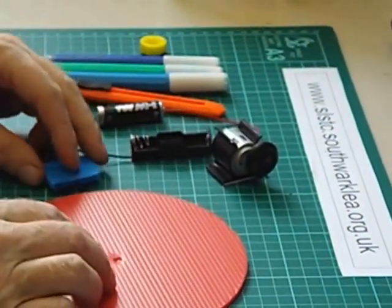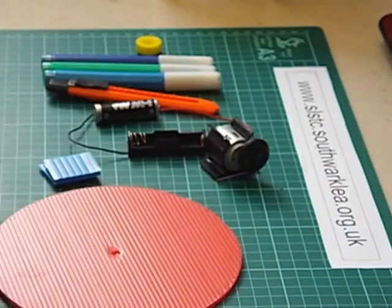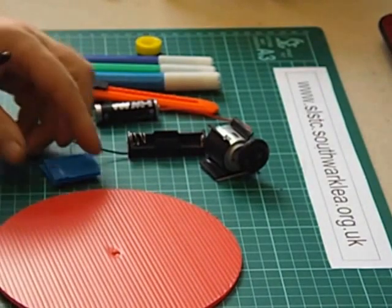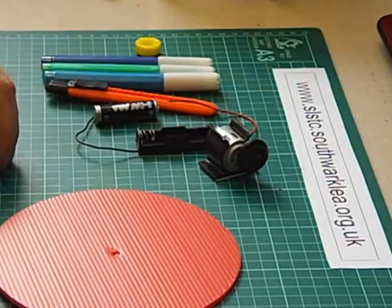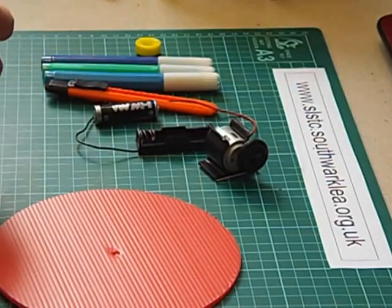So I'm just going to use a glue gun. You could use sellotape to fix these two pieces of corex in place. There we are.